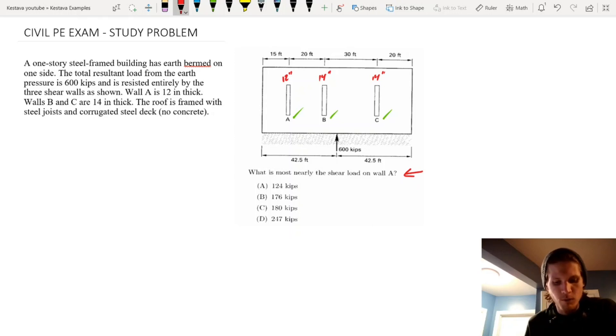Today, this whole problem looks like it's set up that we would need to run calculations for a rigid diaphragm. But actually, the big key component here is right here. No concrete. So just the steel corrugated decking, which is typical for a lot of roofs for metal buildings, is a flexible diaphragm.